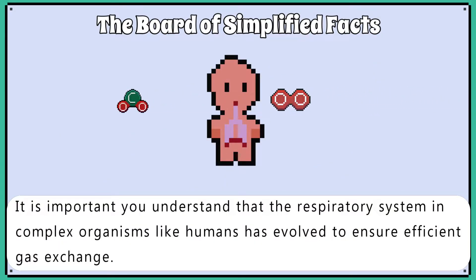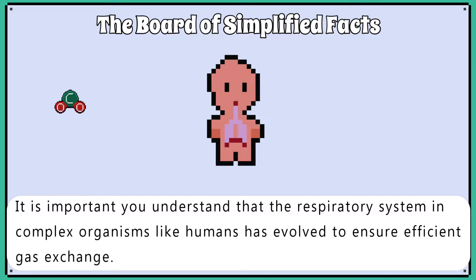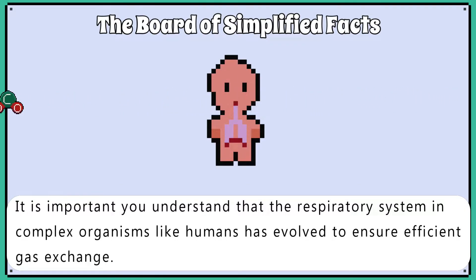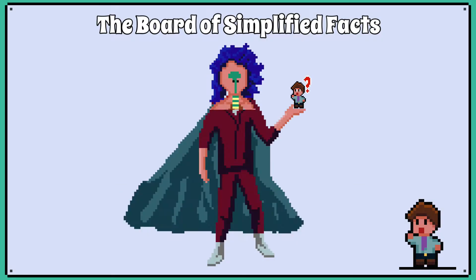It is important to understand that the respiratory system in complex organisms, like humans, has evolved to ensure efficient gas exchange. You must be able to label the respiratory system in humans.